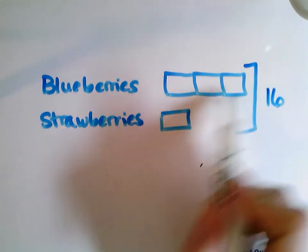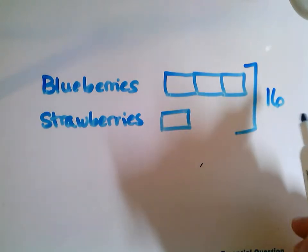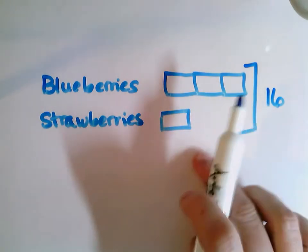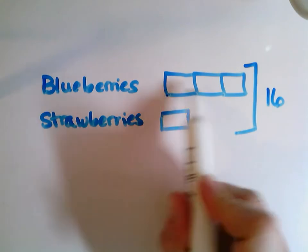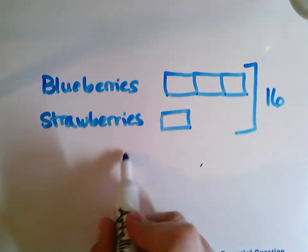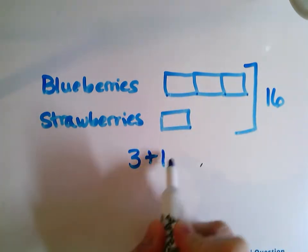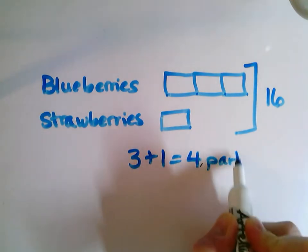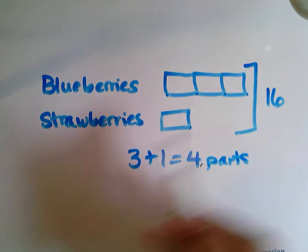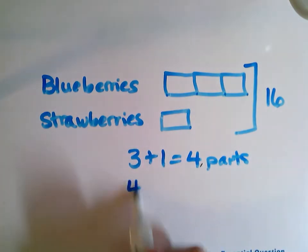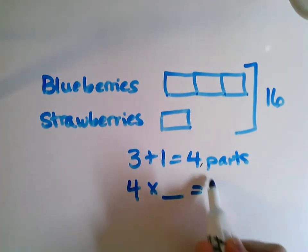So all of these parts together are going to make 16. I'm looking at all my parts and I see that I have three plus one, which is four. I have four parts. It's all my parts together.